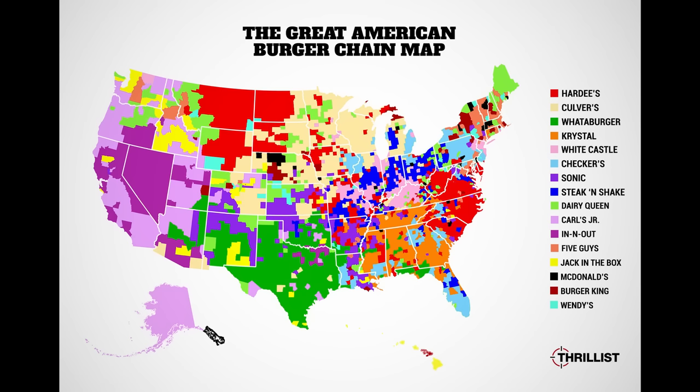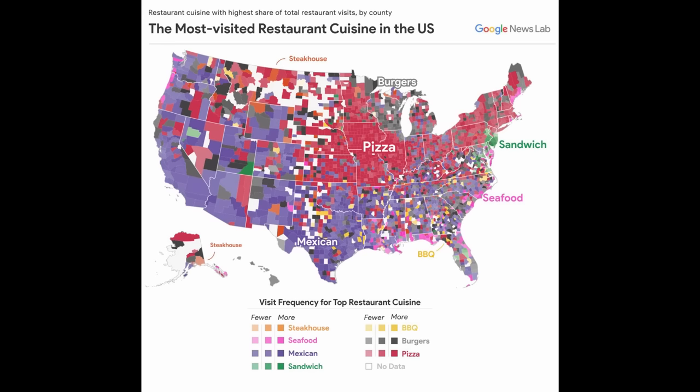These two maps, created by Thrillist, show the popularity of different types of food across the US. The first, called the Great American Burger Chain Map, shows some clear regional differences between Americans' favorite burger joints, with In-N-Out dominating the West, Five Guys the South, Culver's the Upper Midwest, and so on. The second map breaks it down by simply the type of food, and it's pretty much all about Mexican food and pizza, with some exceptions like the popularity of sandwiches in New Jersey and Philadelphia.